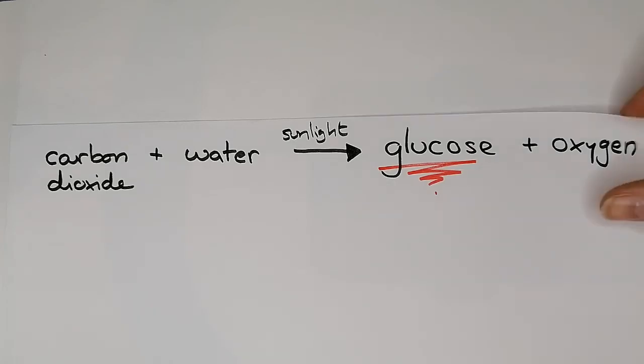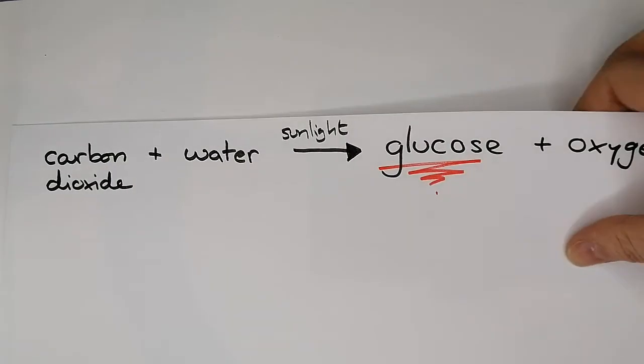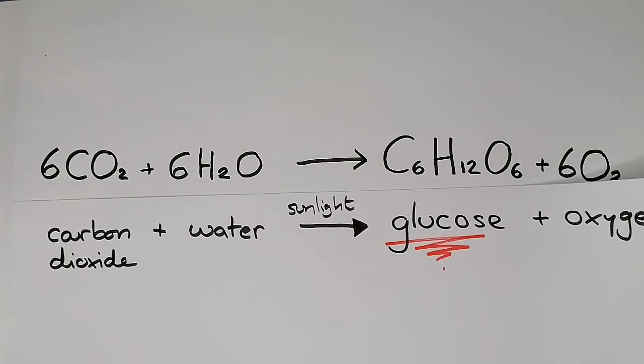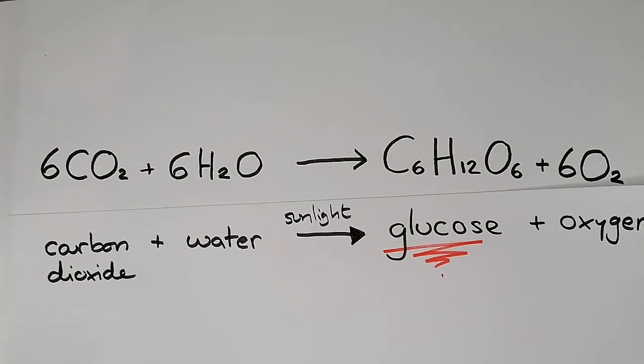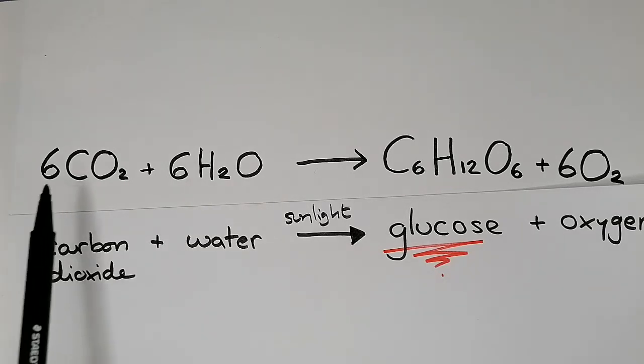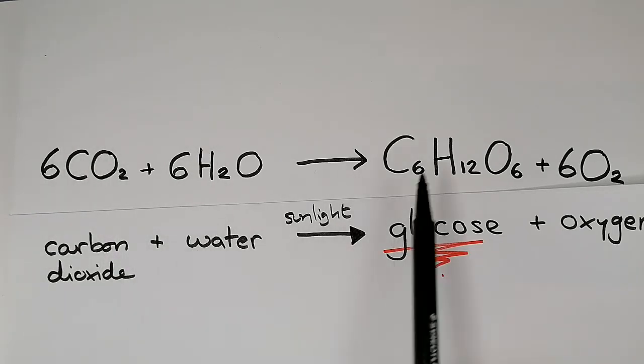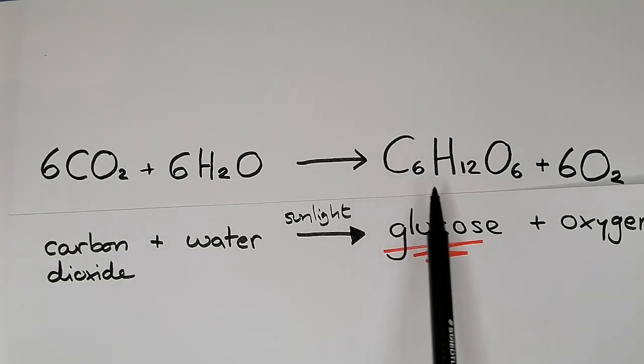You need to also be familiar with the symbol version of this equation. Now I've put this so that these line up as best as I can so that you can see what's going on. So we've got carbon dioxide here and you have the symbol version. Water, this is the symbol version for glucose and this is the symbol version for oxygen.